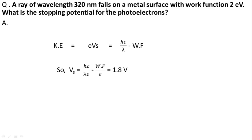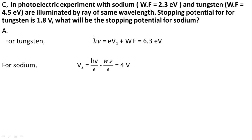Next problem: A ray of wavelength 320 nm falls on a metal surface with work function 2 eV. What is the stopping potential for the photoelectrons? The maximum kinetic energy can be measured if we have the knowledge of the stopping potential. If stopping potential is Vs, then multiplying by electronic charge gives the kinetic energy of the photoelectron: eVs = hν - φ = hc/λ - φ. So Vs = hc/(λe) - φ/e = 1.8 V.